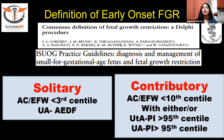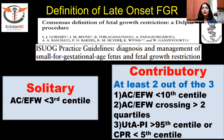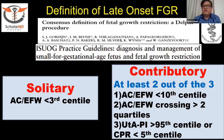For late onset FGR, the solitary criterion is AC or estimated fetal weight less than 3rd centile. For contributory criteria, you need at least two out of three: AC or estimated fetal weight less than 10th centile, AC or estimated fetal weight crossing two quartiles over a period of time, or uterine artery PI more than 95th centile or cerebroplacental ratio less than 5th centile.